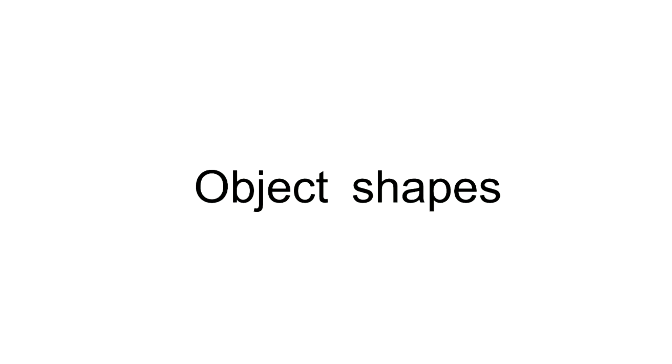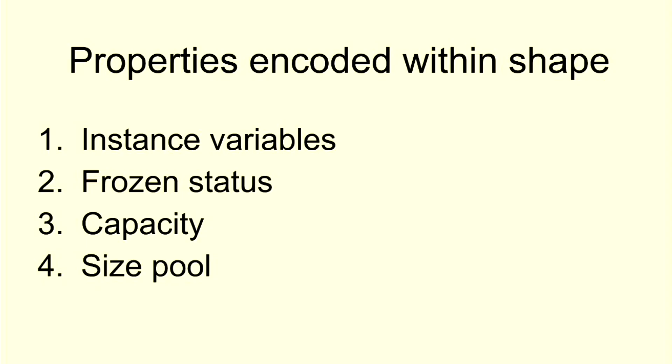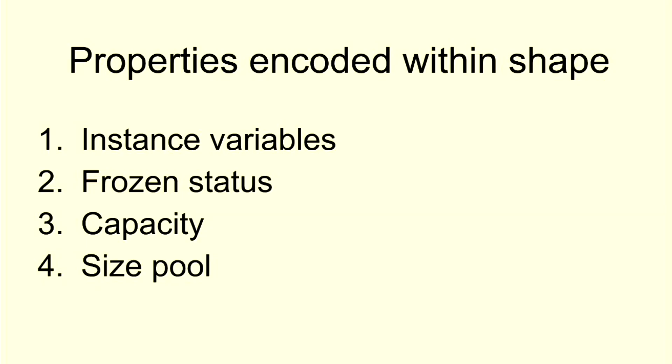Now we've talked about how instance variables worked in Ruby 3.1. Next up: what are object shapes? We're not talking about literal shapes here. When we say object shapes, we mean Ruby objects — something like Object.new or a Ruby object that we're used to. And when we say shapes, we're going to use this term to say every object has a shape. It's a technique used in other VMs as well. The shape represents the object's properties — some properties encoded with the shape are instance variables, frozen status, capacity, and size pool.